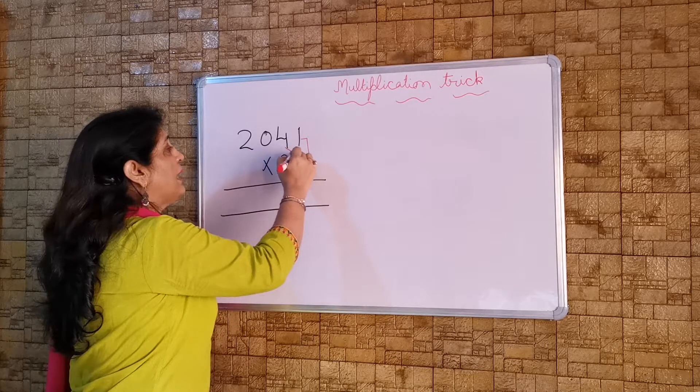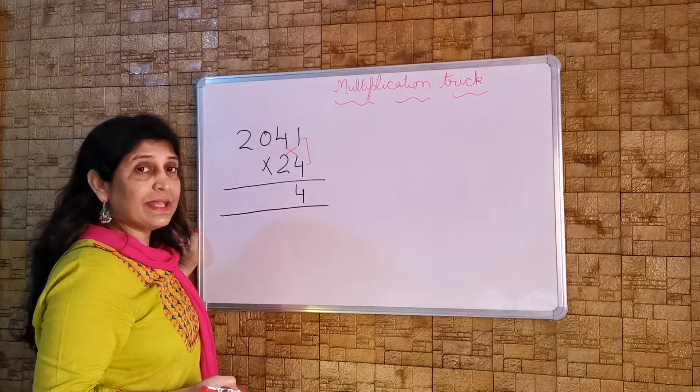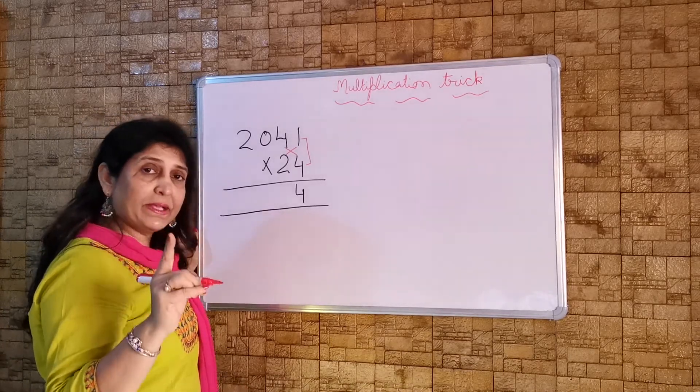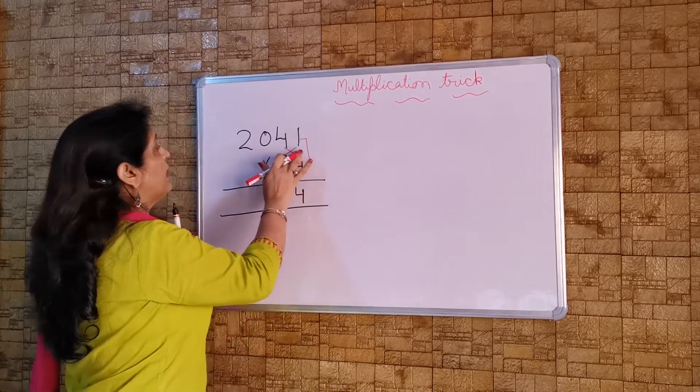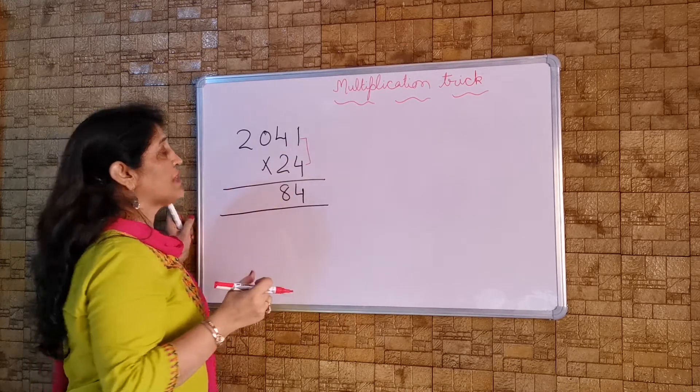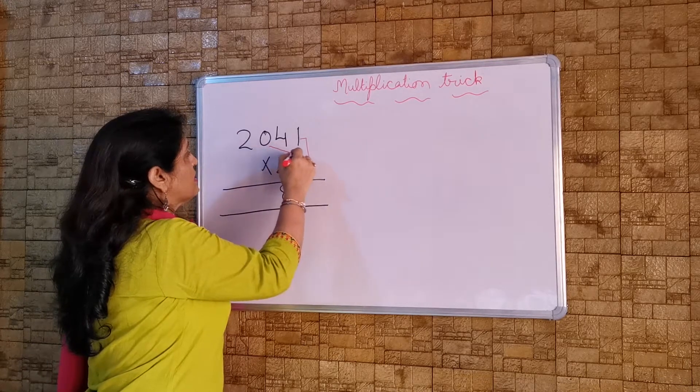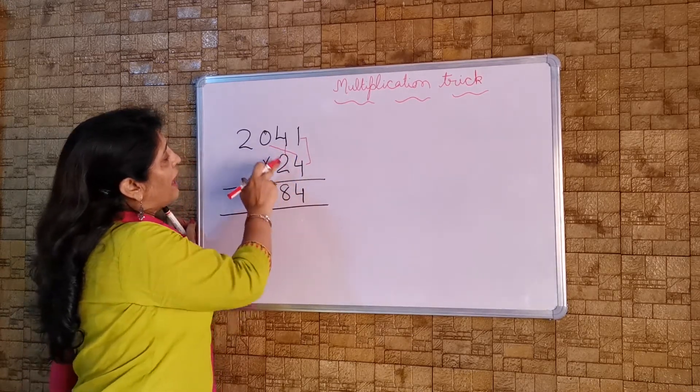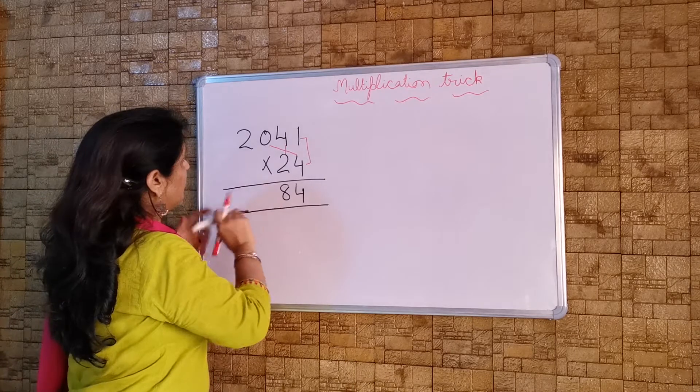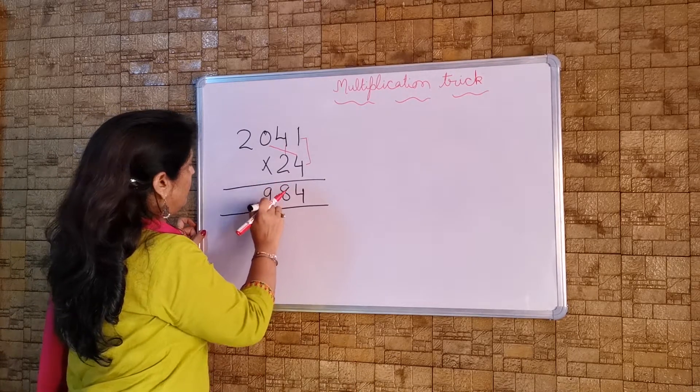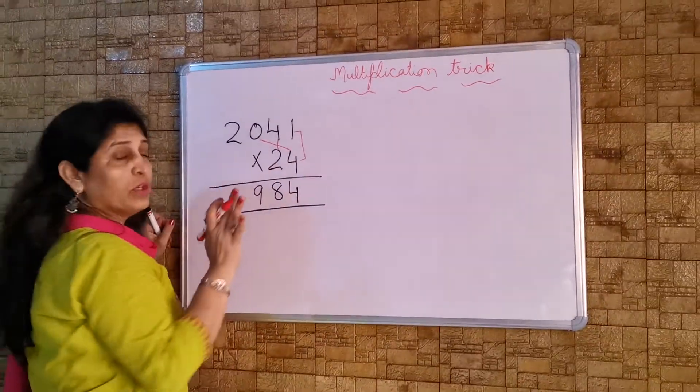So now put the cross multiplication sign like this only. Then 4 times 4 is 16 and 2 times 1 is 2. It becomes 16 plus 2 is 18. So I am going to write 8 here and 1 in the mind. Let me erase this cross multiplication sign because I have to make a new one. So now I will be making this sign. 4 times 0 is 0 and 2 times 4 is 8. 8 plus 1 is 9. And now I will be moving forward. There is no carry forward.